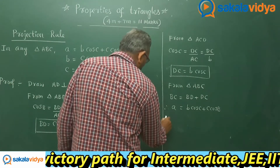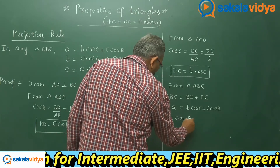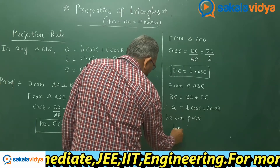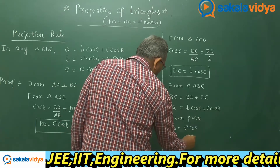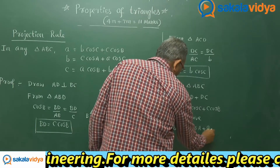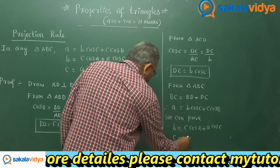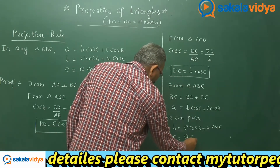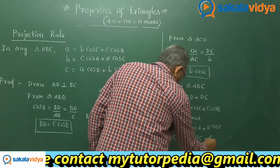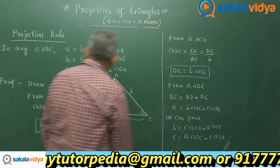In a similar manner, the remaining formulas can also be proved: b is equal to c·cos A plus a·cos C, and c is equal to a·cos B plus b·cos A.